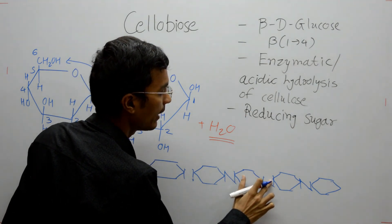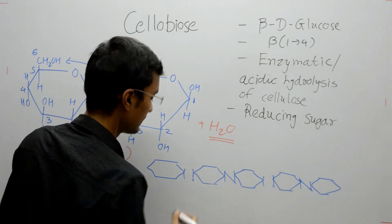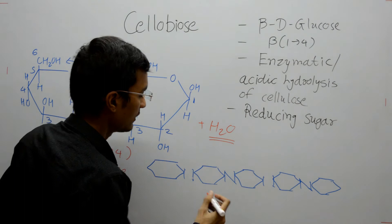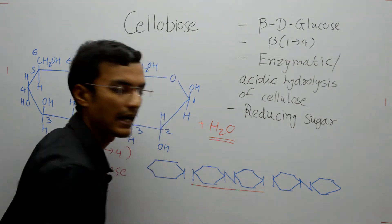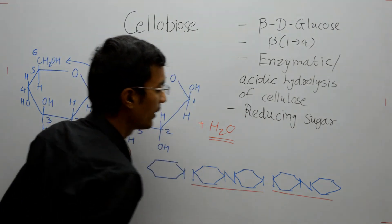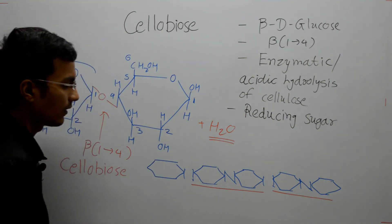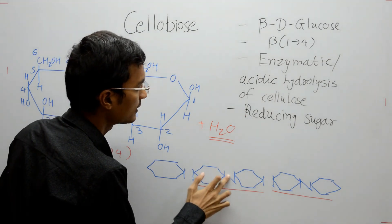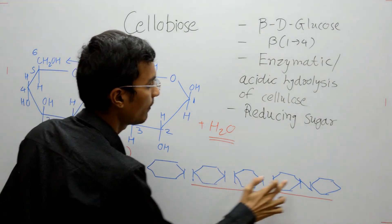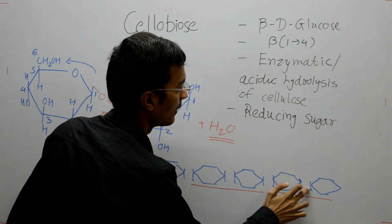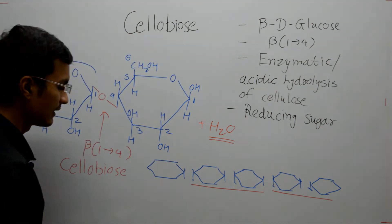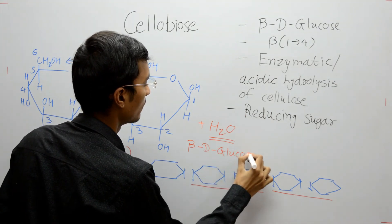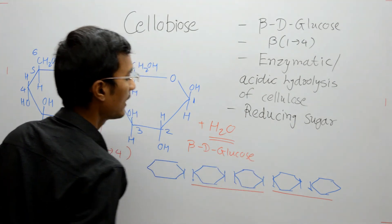The enzyme randomly breaks the beta-1,4 bonds, and what remains is cellobiose disaccharide. So this is one disaccharide molecule and this is another disaccharide molecule. When complete hydrolysis is done and all of these bonds are broken by the enzyme, what remains is beta-D-glucose molecules.